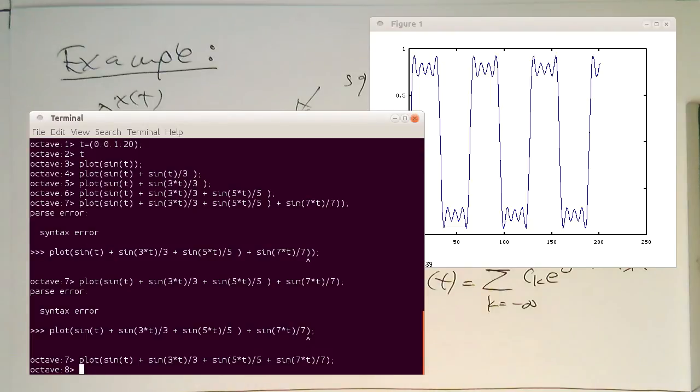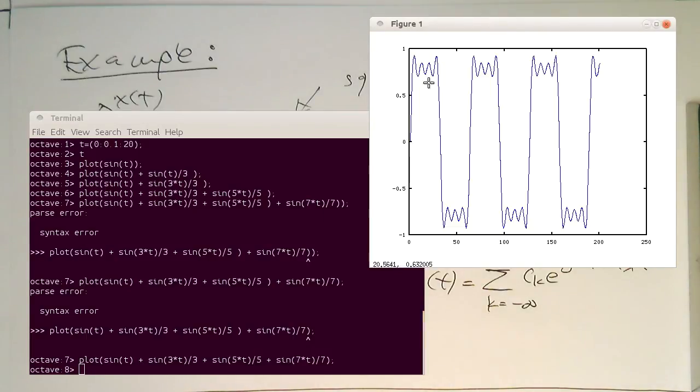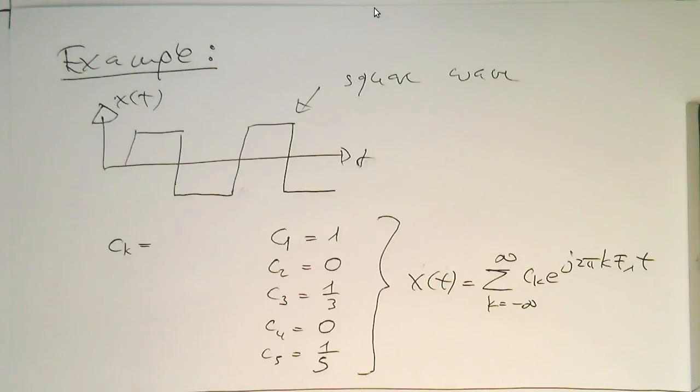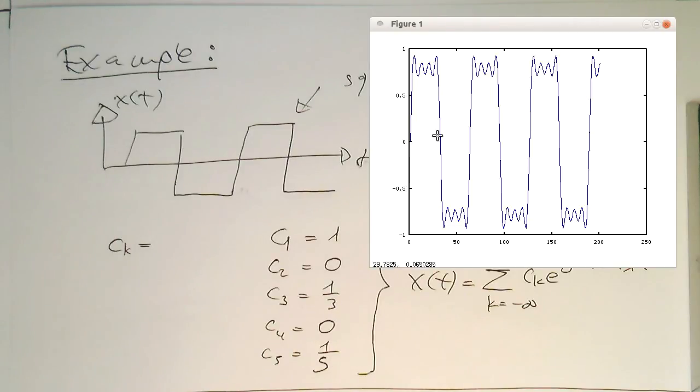We see that this is already slowly approaching a square wave. If we continue this infinitely, just by using the odd harmonics and reducing the amplitude by these factors, then we are slowly reaching a square wave.